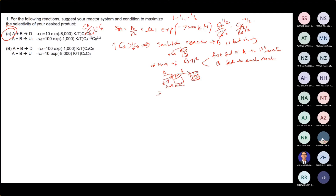Another option is to use a PFR, where you can also write: continuous feed B with low concentration. Alternatively, you can say PFR with feed A at high concentration — just reverse it.